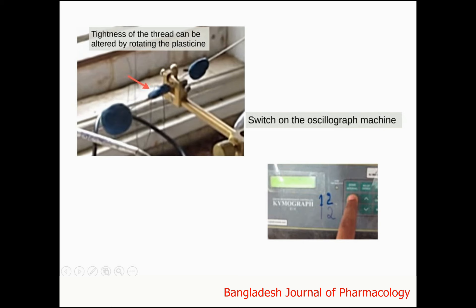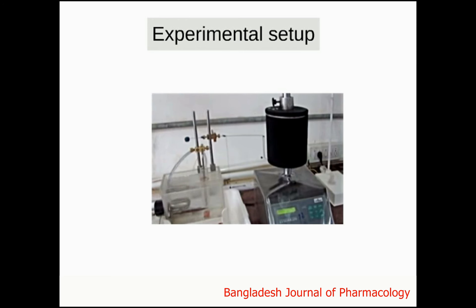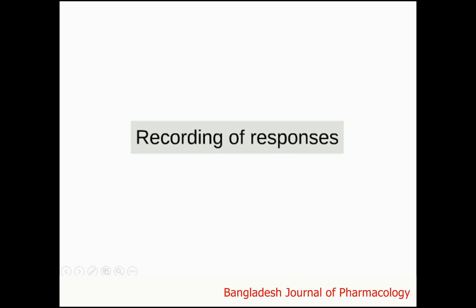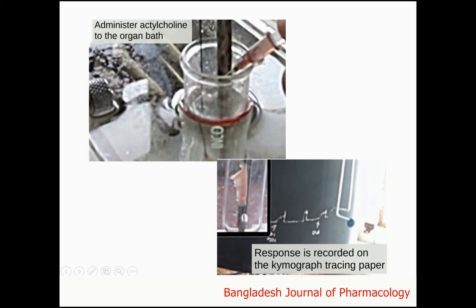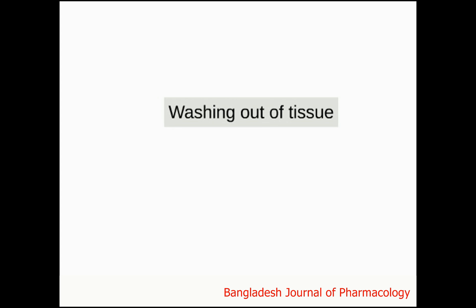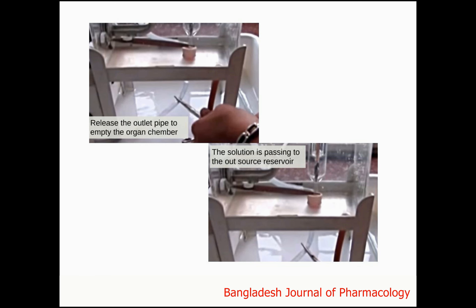The tightness of the thread can be altered by rotating the plasticine. Switch on the oscillograph machine. The next step is the recording of responses. Administer acetylcholine to the organ bath; the response is recorded on the chymograph tracing paper.